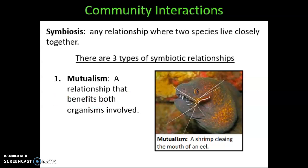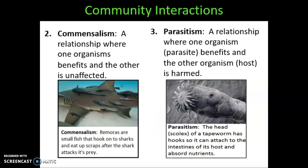The second type of symbiotic relationship we're going to talk about is called commensalism. In this type of relationship, one organism benefits, but the other is unaffected.